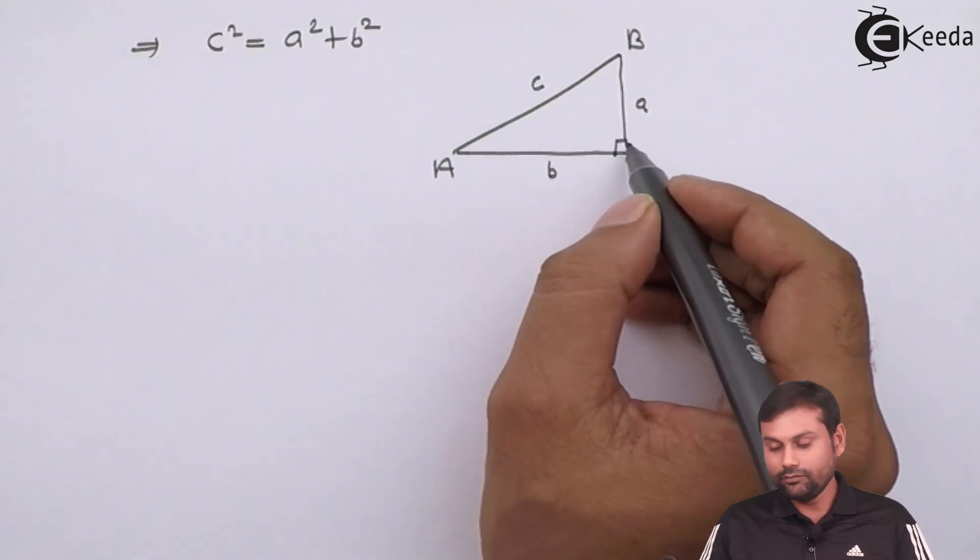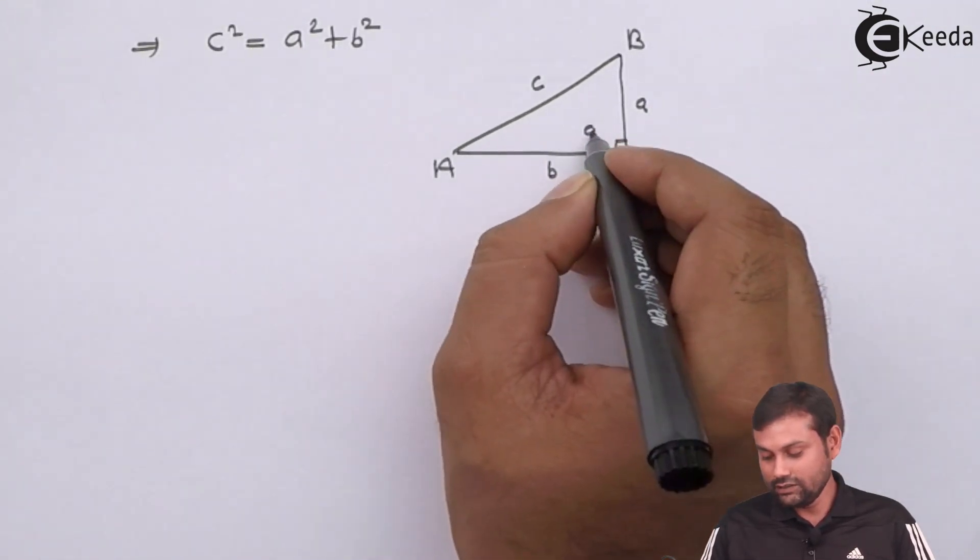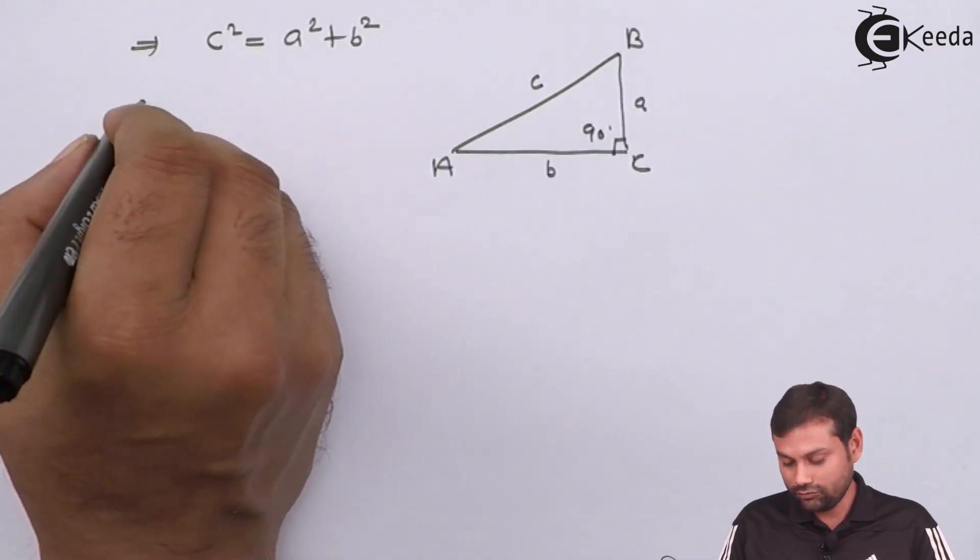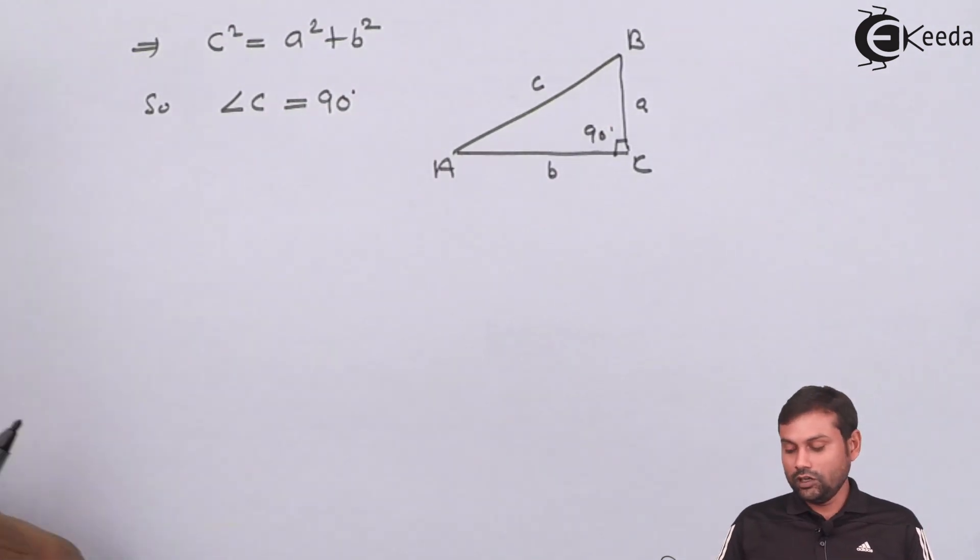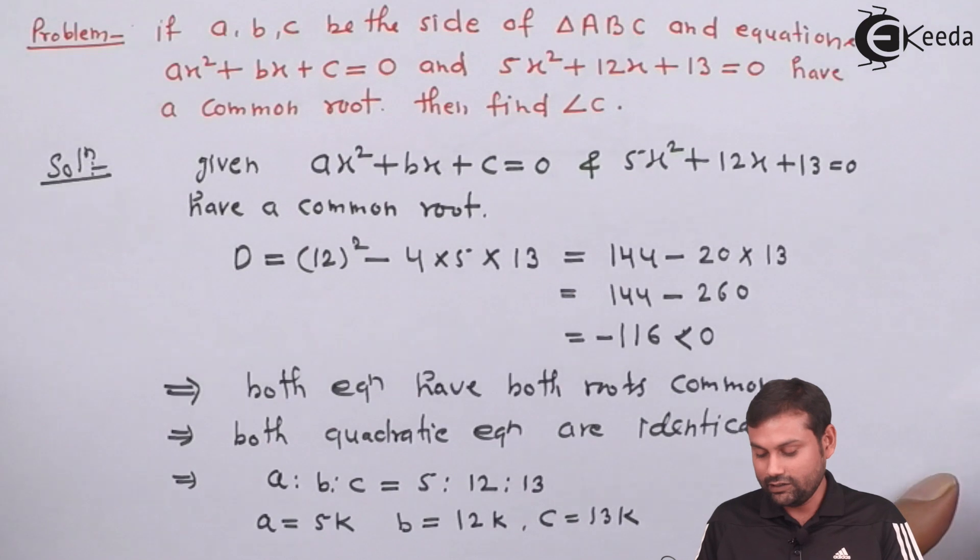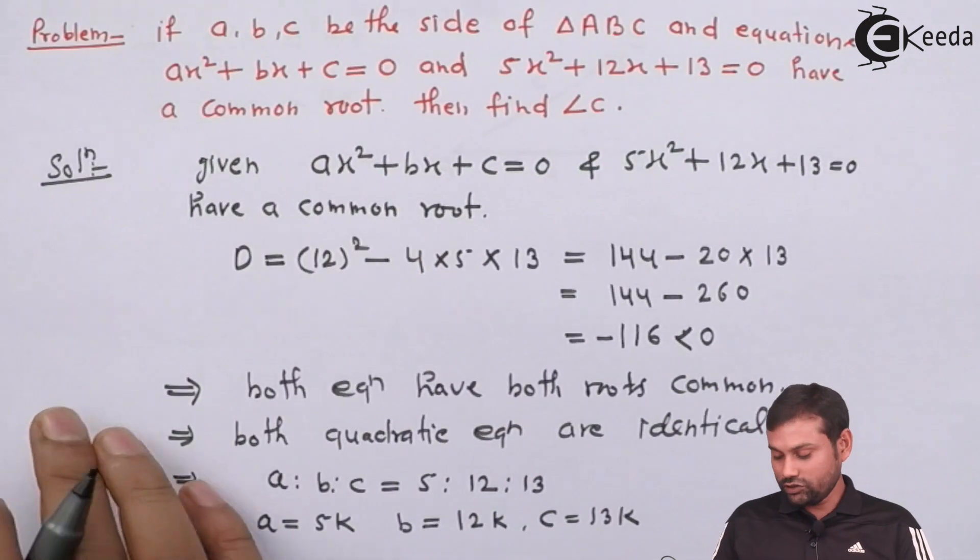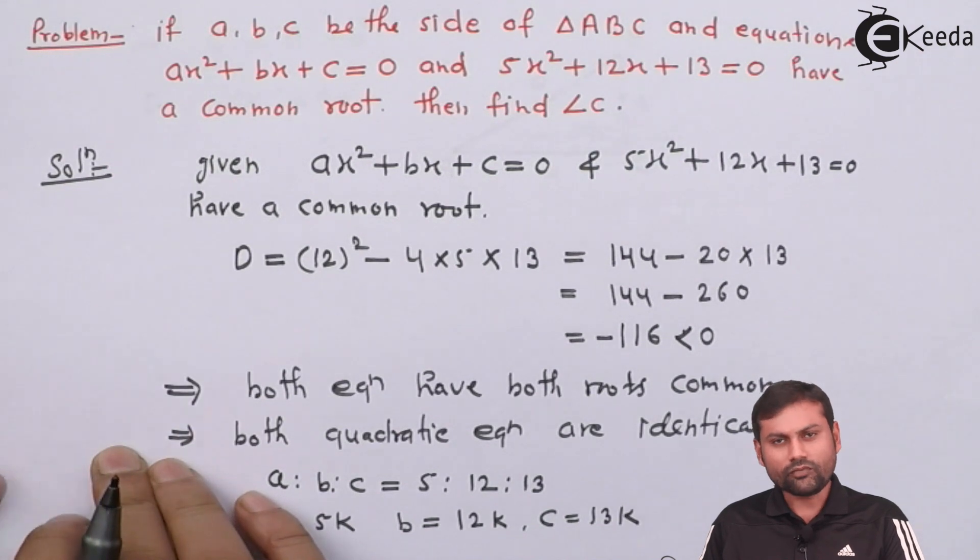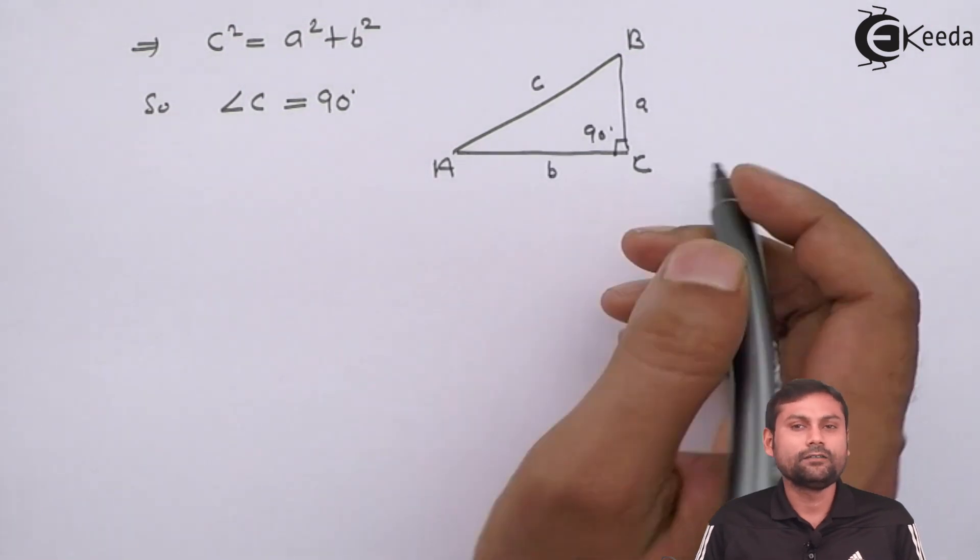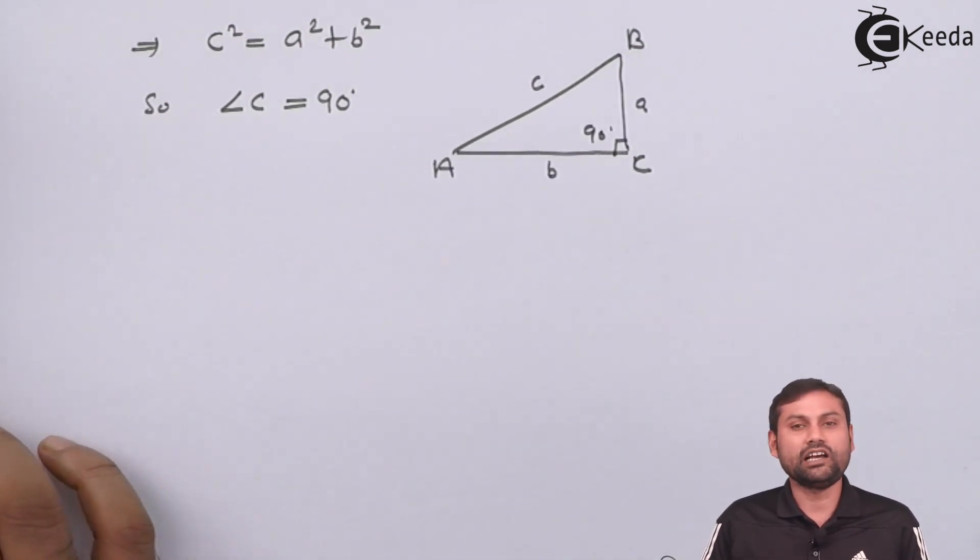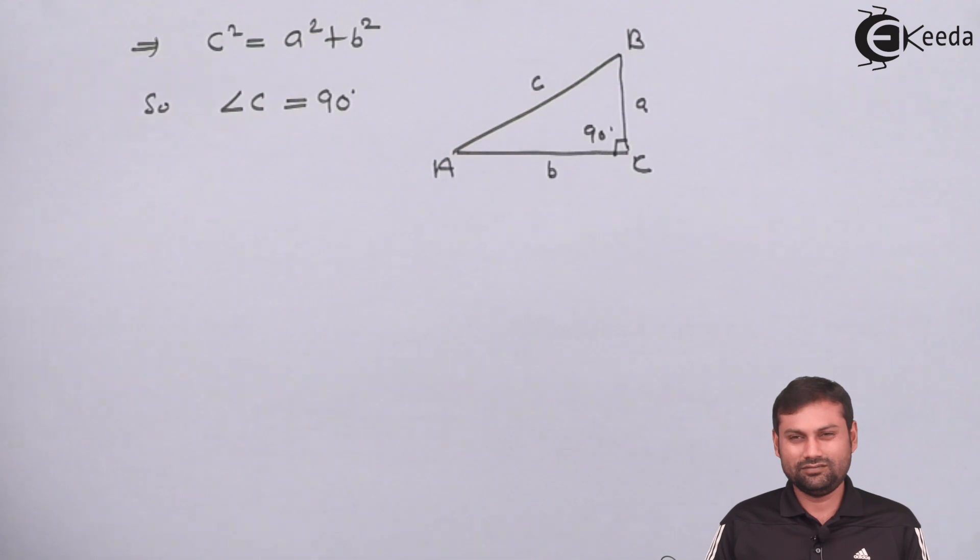So, easily, we get that angle C is 90 degree. So, angle C is 90 degree. So, the angle C is 90 degree. The angle C is 90 degree.